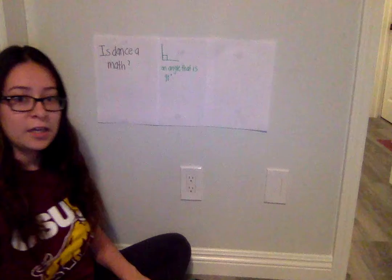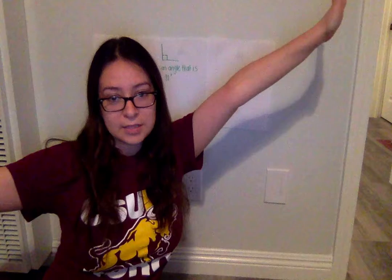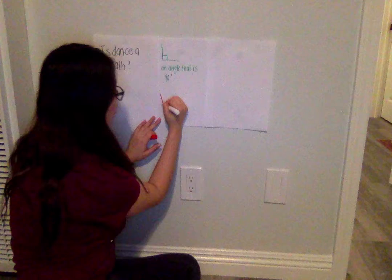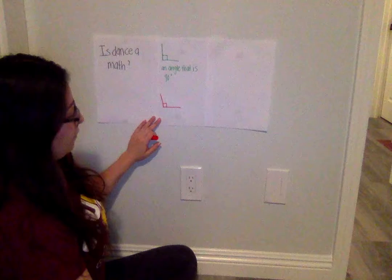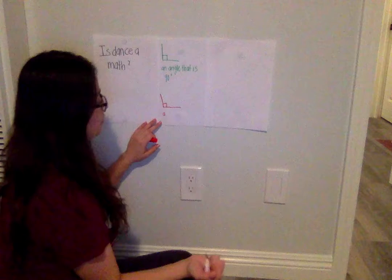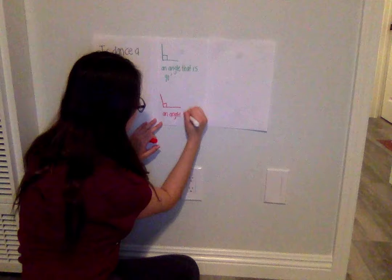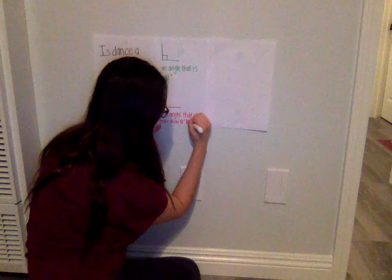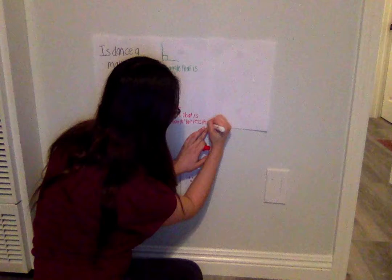Our second angle that we'll be learning about is an obtuse angle. The obtuse angle looks like this. It is an angle that is more than 90 degrees but less than 180. We always make a little box in the middle of our angle to indicate the measure of the angle. An obtuse angle is an angle that is more than 90 degrees but less than 180.